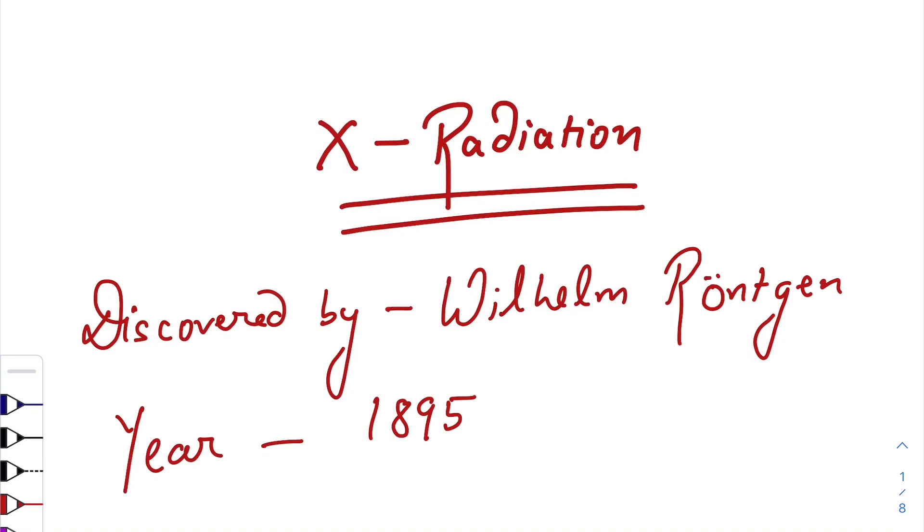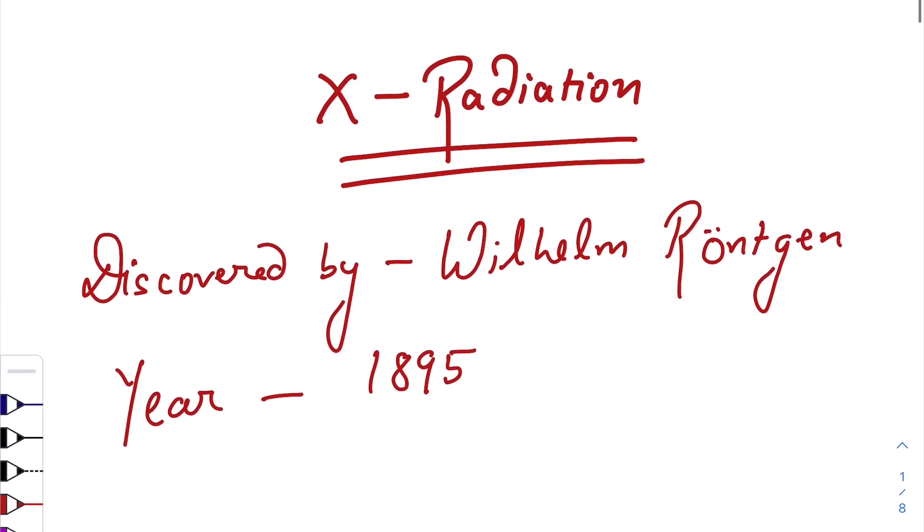This will be a short and simple video on X-rays. After completing this video, I hope you'll be able to do any kind of question that might come in JE without any problem. X-rays form part of the electromagnetic spectrum and were discovered accidentally by physicist Wilhelm Röntgen in the year 1895.